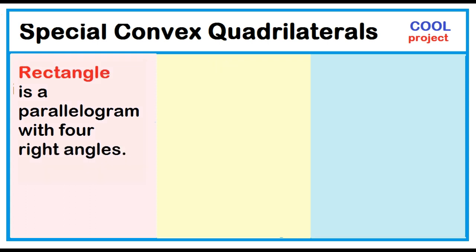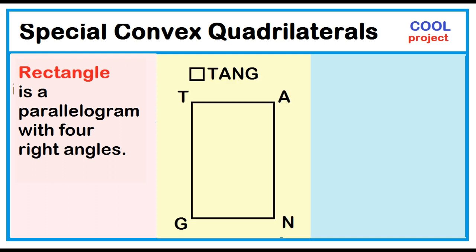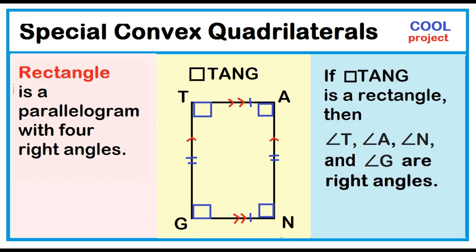A rectangle is a parallelogram with four right angles. Quadrilateral TANG has two pairs of opposite sides parallel and four right angles. If quadrilateral TANG is a rectangle, then angle T, angle A, angle N, and angle G are all right angles.